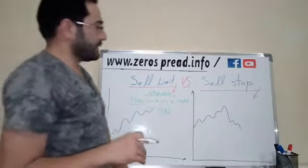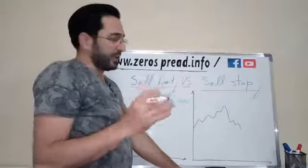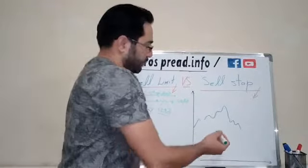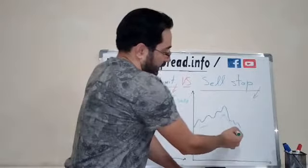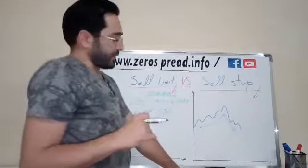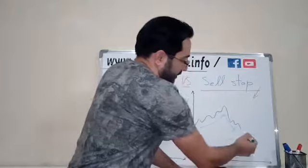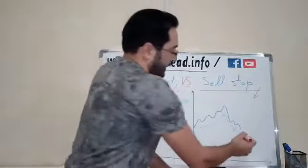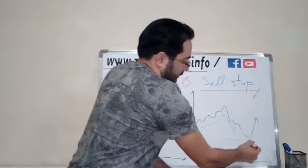But what is the sell stop? The sell stop is the exact opposite — 100% opposite of the sell limit. Sometimes, for example, the market rises up and then starts falling down. Your prediction or analysis says that if the price reaches a certain level, it could either raise up again or continue falling further down.